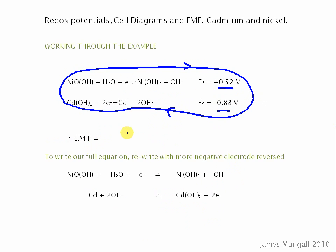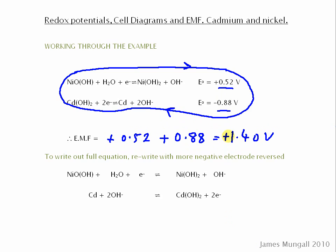To work out the EMF, we take plus 0.52, and then because the cadmium one is going in the reverse direction, we change the sign of that electrode potential to plus 0.88, giving us 1.40 volts. The positive sign confirms that this is the direction in which the reaction will proceed.